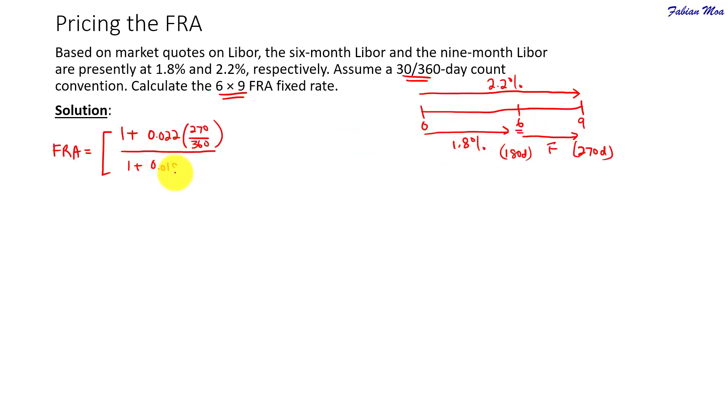So, you will take the expiration date. That's 1.8%. Okay, that's for 6 months which is 180 over 360 or we can just take 6 over 12. Okay, so once you are done with this, I will subtract 1.